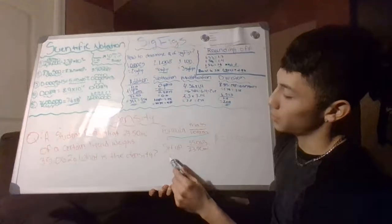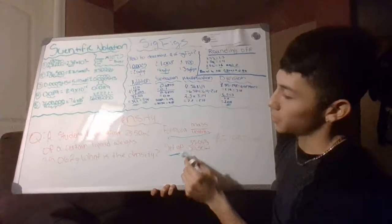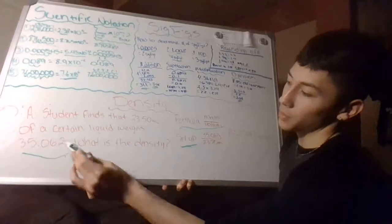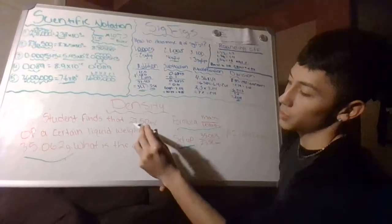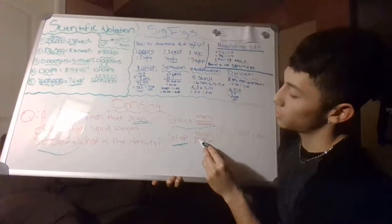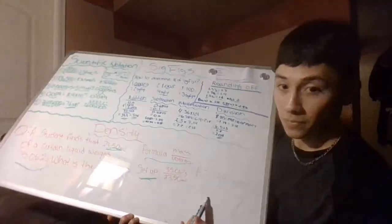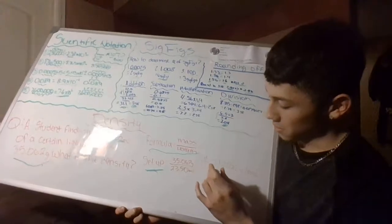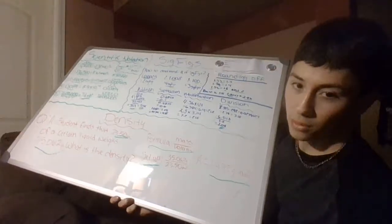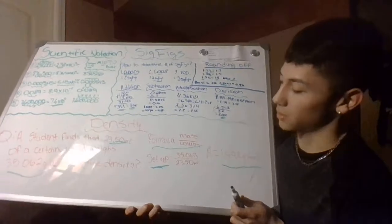You set up the equation as mass over volume: 35.062 grams divided by 23.50 milliliters, which gives you 1.492 grams per milliliter. That would be your density. Pretty simple — just a straightforward equation.